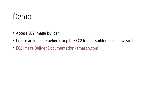I'll go through a quick demo showing how to access Image Builder and how to create an image pipeline. It's not like once you create the image you cannot update it — it's a pipeline where you can keep adding services and updating it. Once you build it, it creates a new version of the image that you can use in your new EC2 instances.